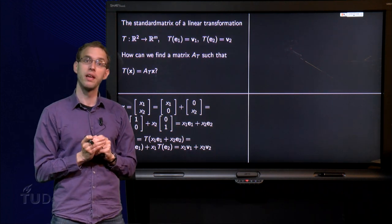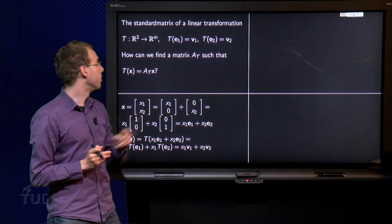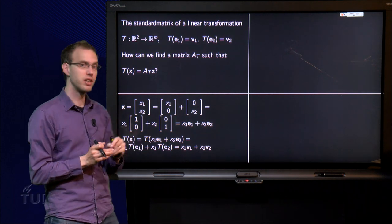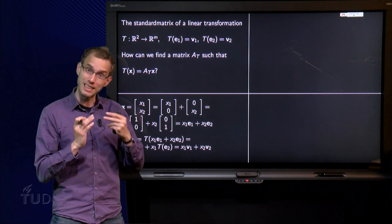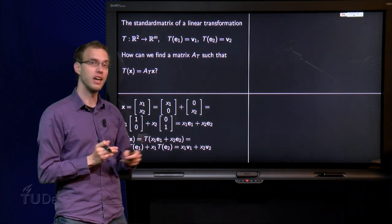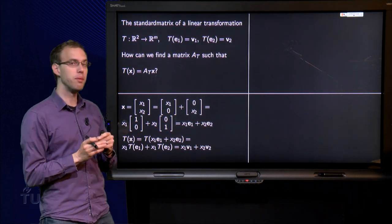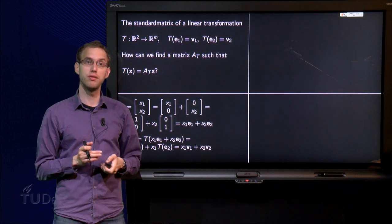There we are. And that's exactly what was given over here. You know T of E1 and T of E2. So you know that T of X equals X1 times T of E1 equals V1 plus X2 times T of E2 which equals V2. So there we have the image of a general X given in terms of V1 and V2.